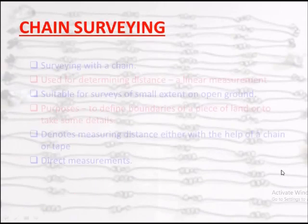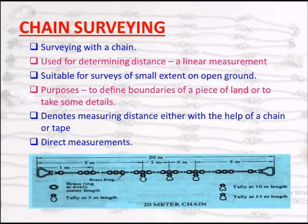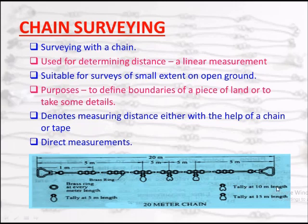Chain surveying: surveying with a chain used for determining distance, a linear measurement. Suitable for survey of a small extent on open ground. Now I will show you a 20-meter chain figure. A brass ring is provided at every one-meter length. Tally marks are provided at 5-meter, 10-meter, and 15-meter lengths.